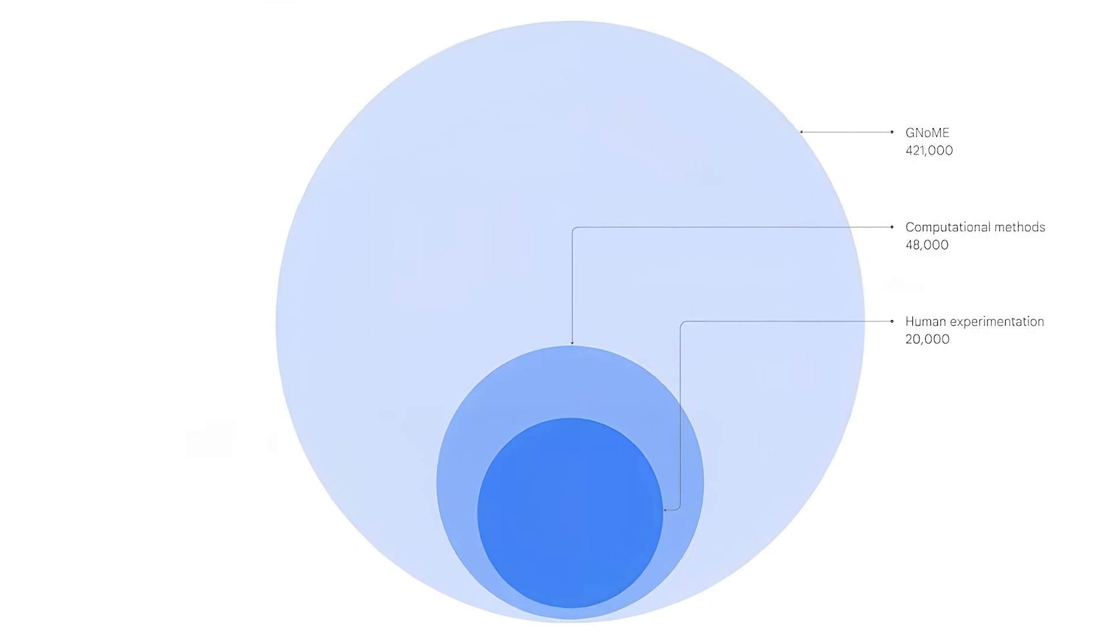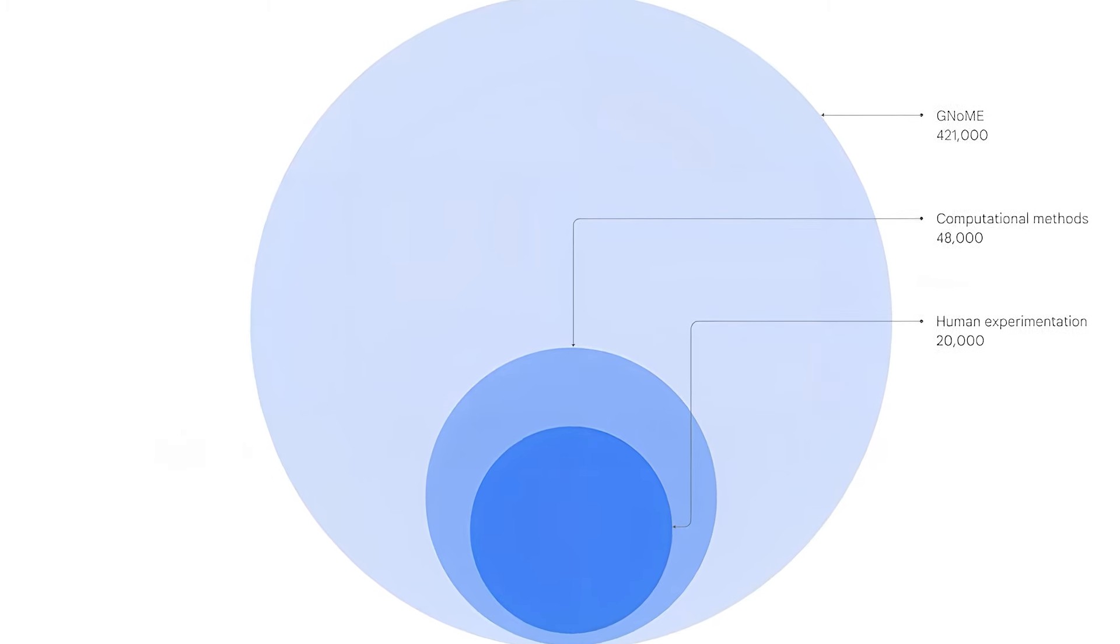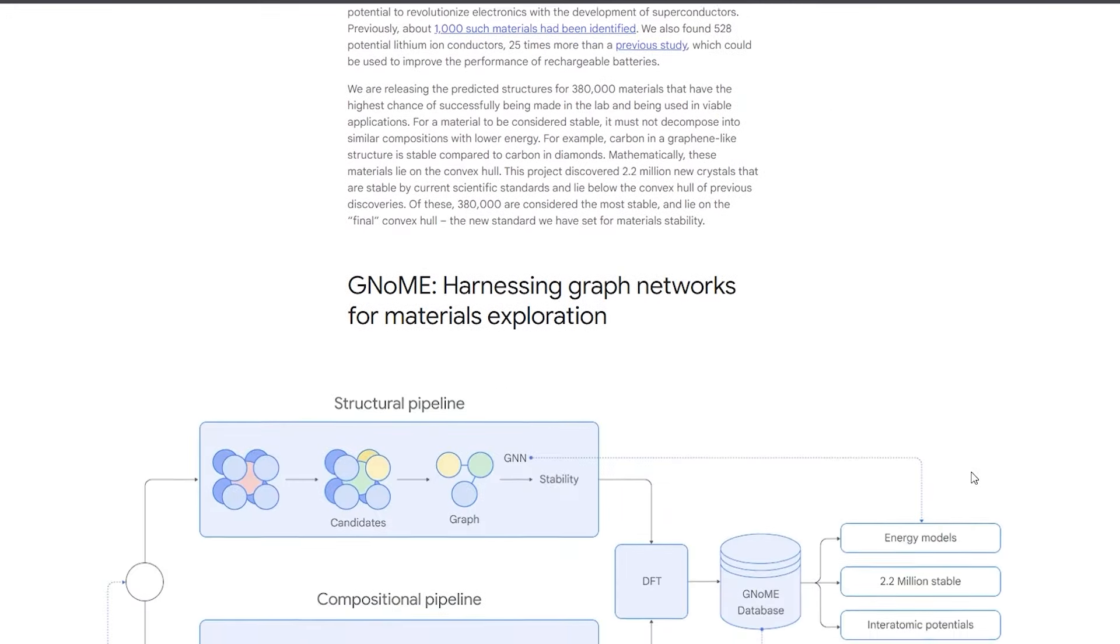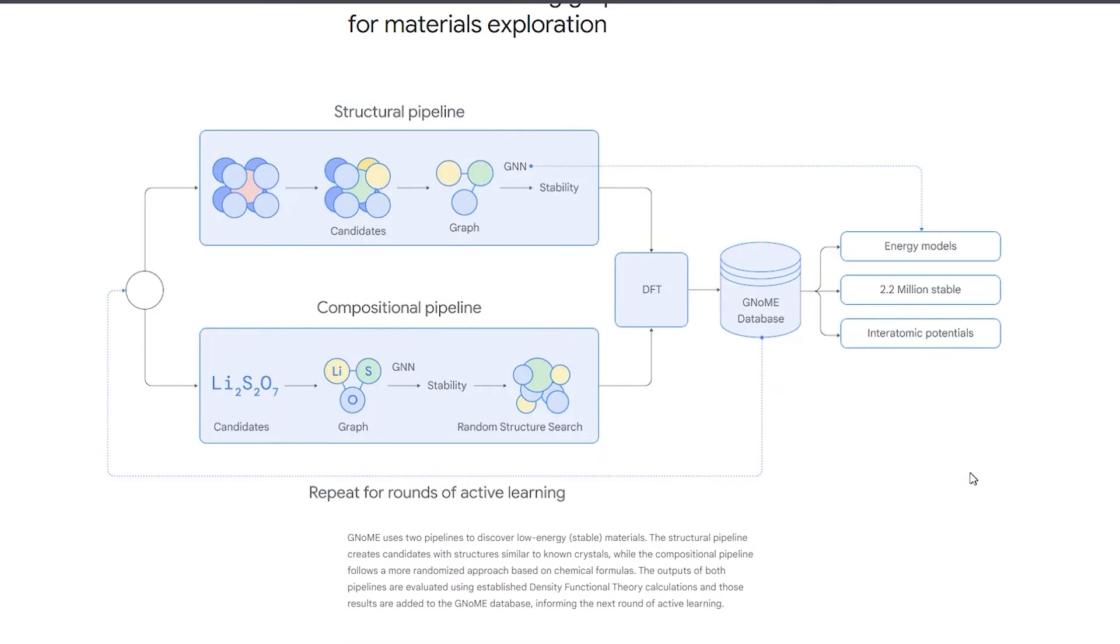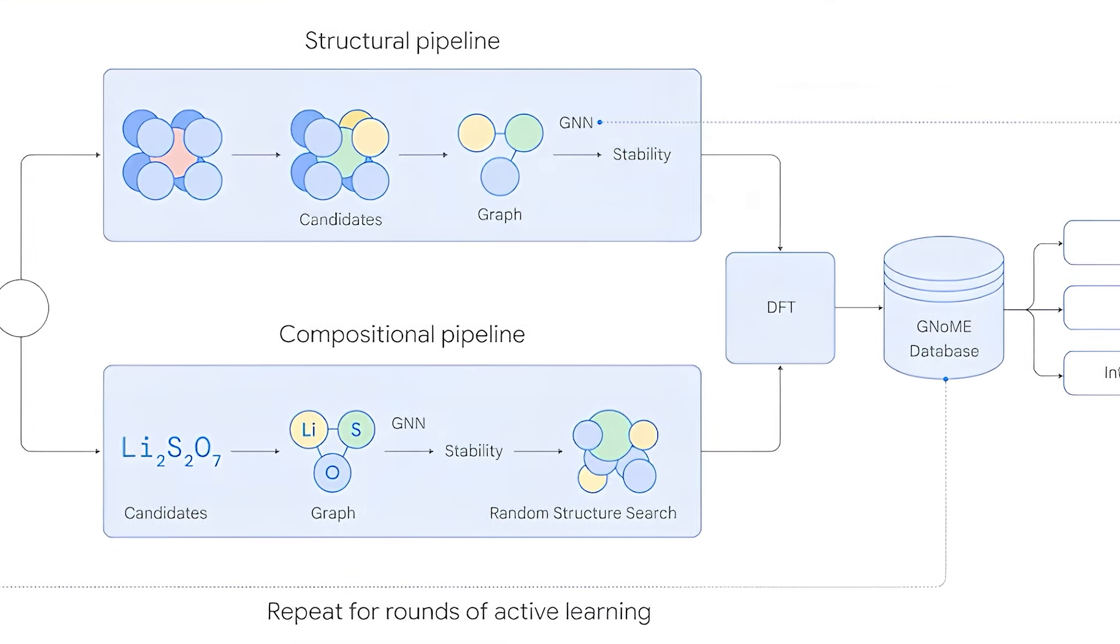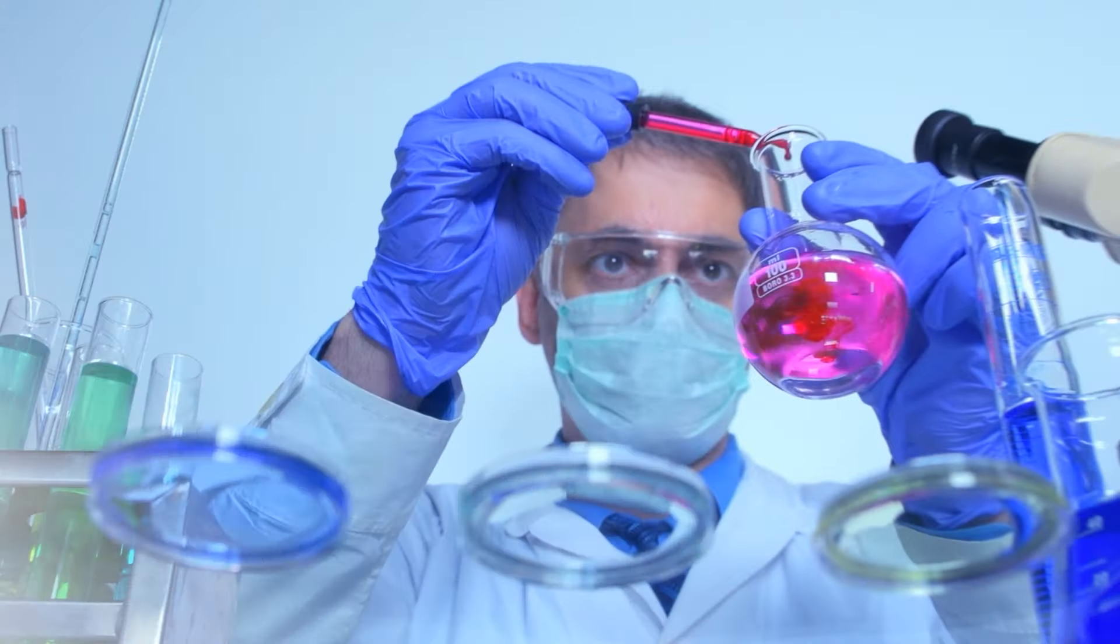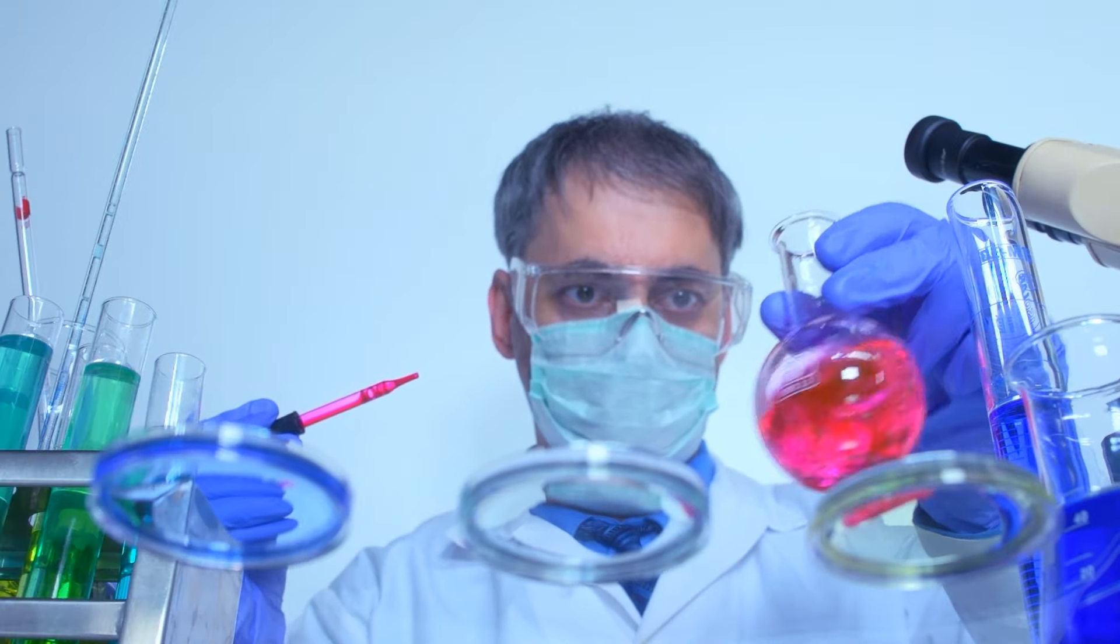In a recent Nature paper, Google DeepMind shared remarkable results. Gnome successfully predicted the structures of 2.2 million new materials, equivalent to nearly 800 years of traditional knowledge. But it didn't stop there. Over 700 of these materials were synthesized and tested in the lab,